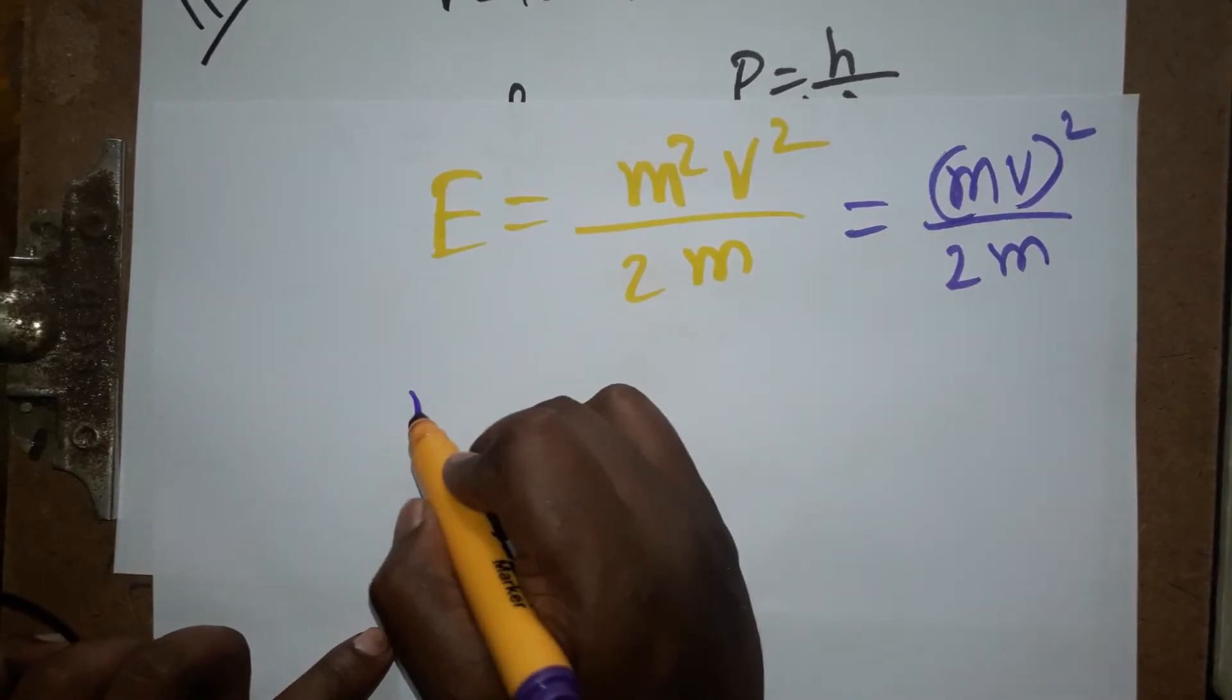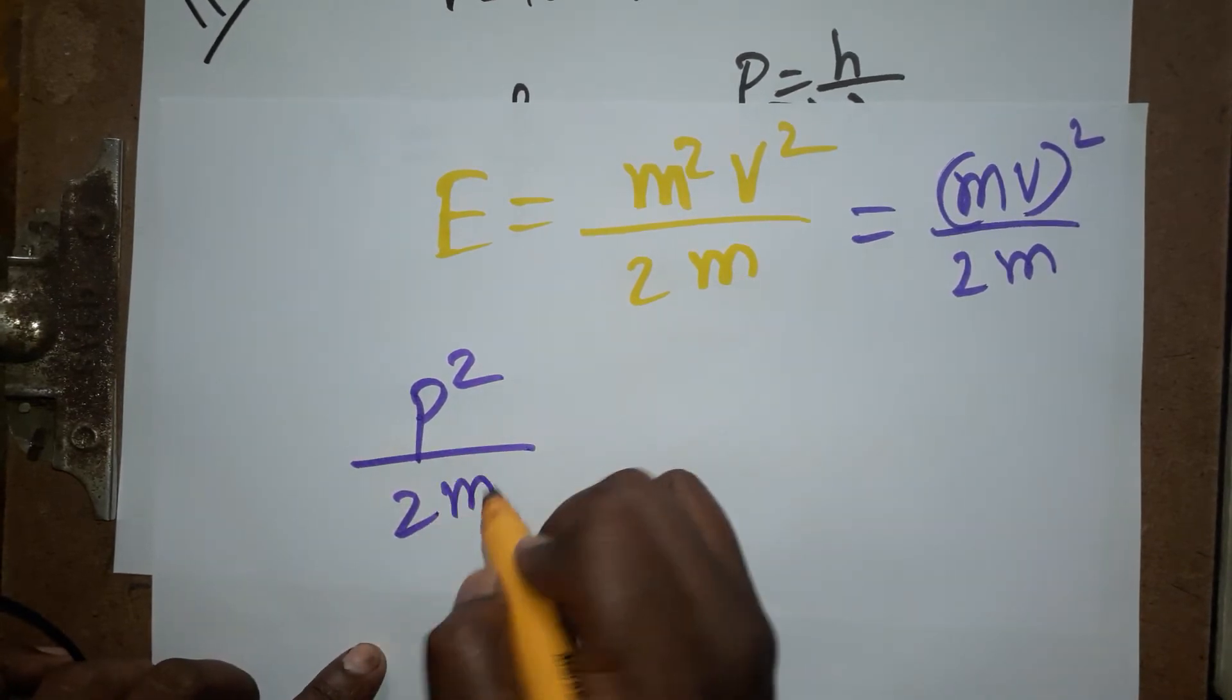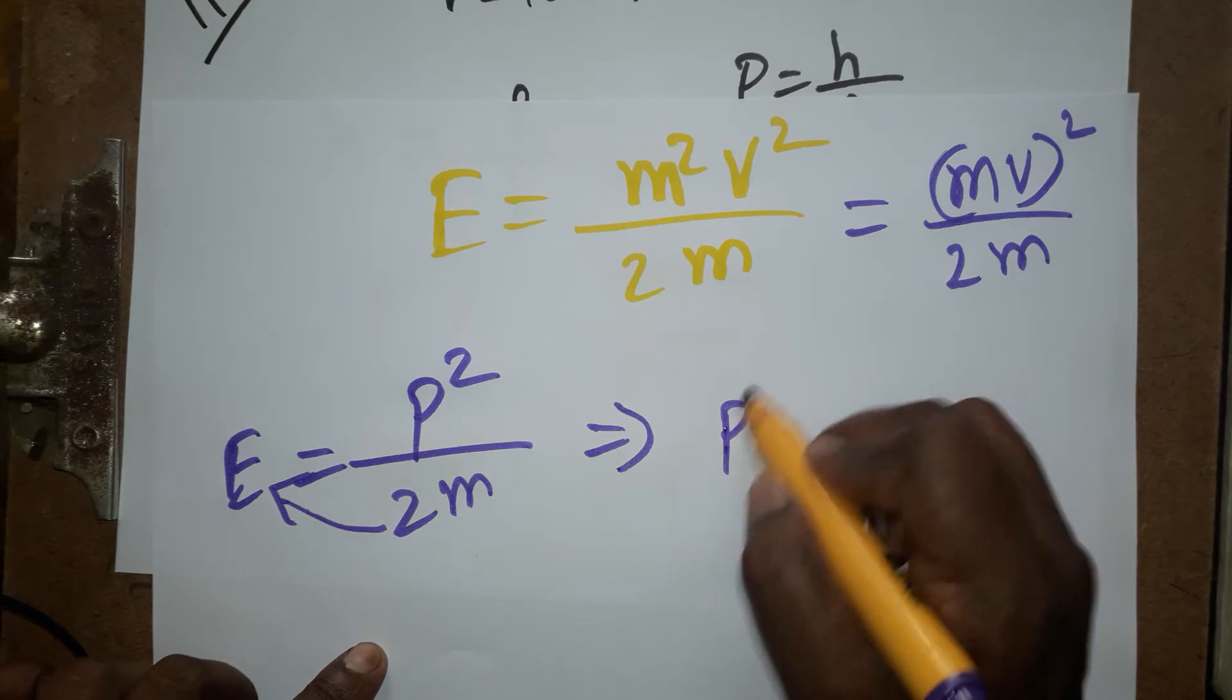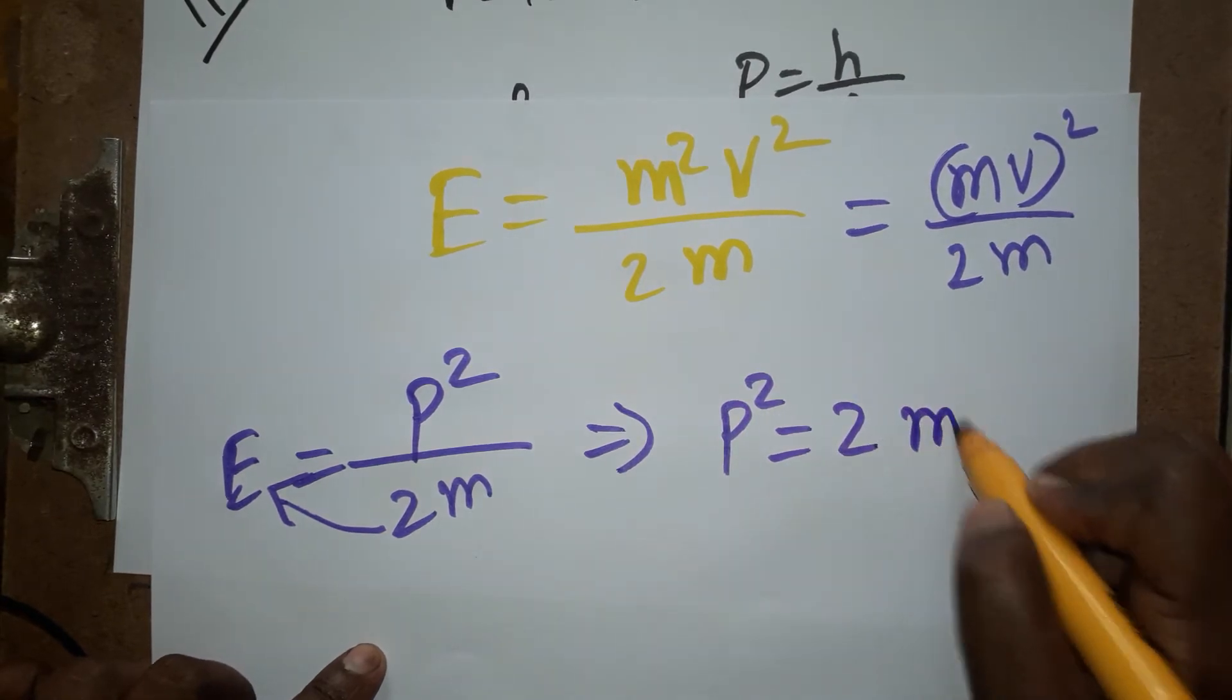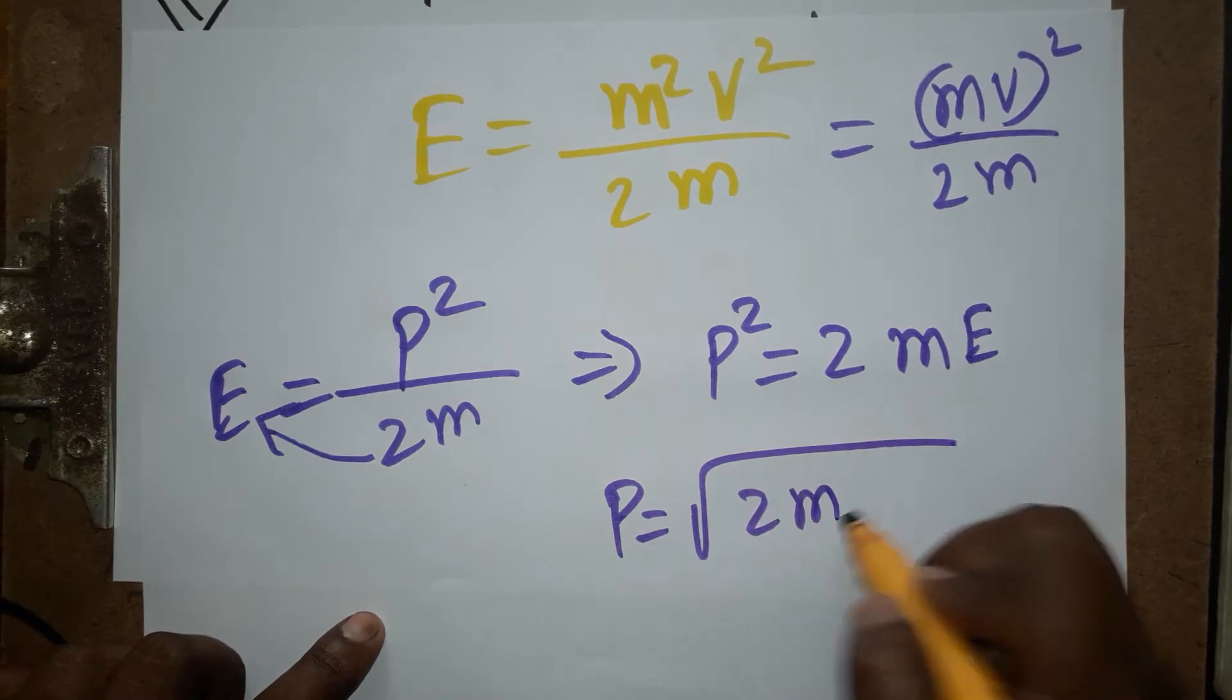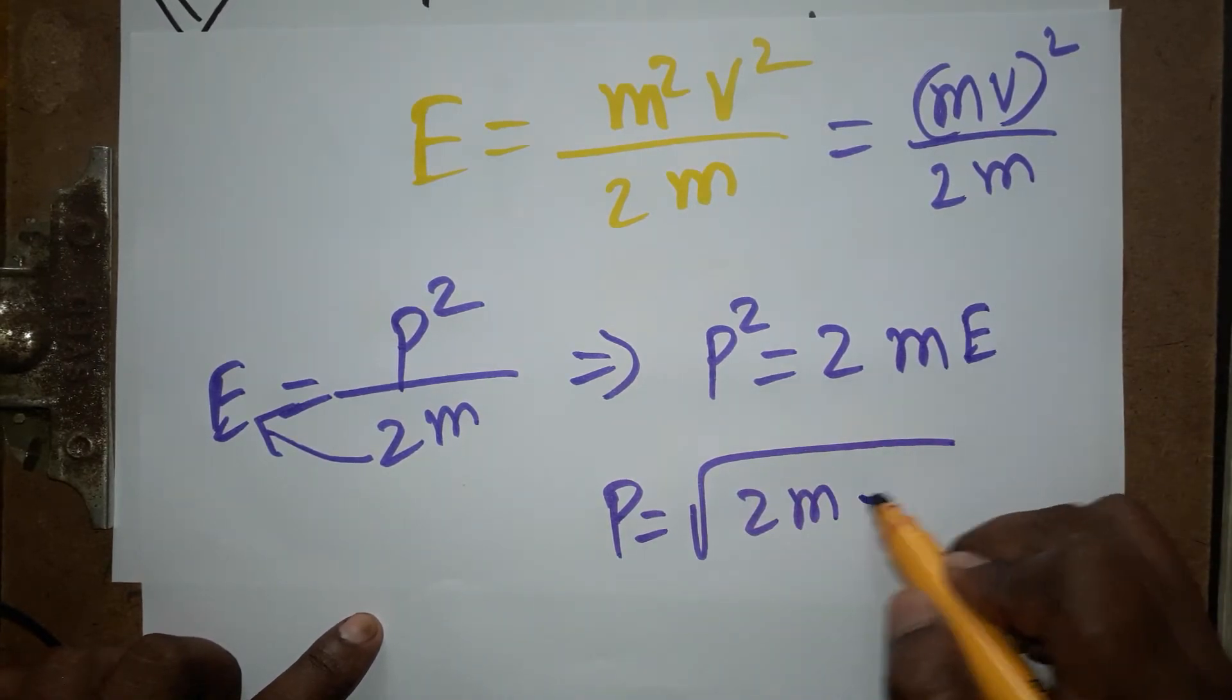This is going to be momentum, so momentum square divided by 2 m is equal to energy. So momentum square is equal to 2 m E. So if you want momentum, momentum is equal to root of 2 m E. Electron energy is going to be e V.